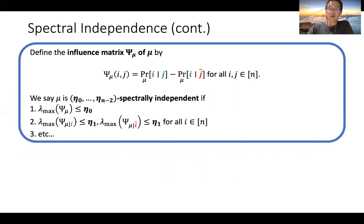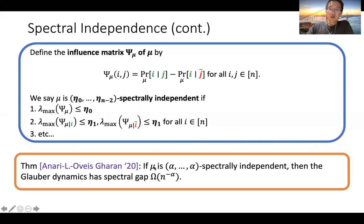We strengthen this definition to encompass all conditional distributions. We say mu is (eta_0, ..., eta_{n-2}) spectrally independent if not only does the influence matrix of mu itself have maximum eigenvalue bounded by eta_0, but also every conditional distribution obtained by conditioning on a single element has its influence matrix bounded by eta_1 and so on. One of our main results is that if mu is alpha spectrally independent, then the Glauber dynamics has a spectral gap of n to the minus alpha.